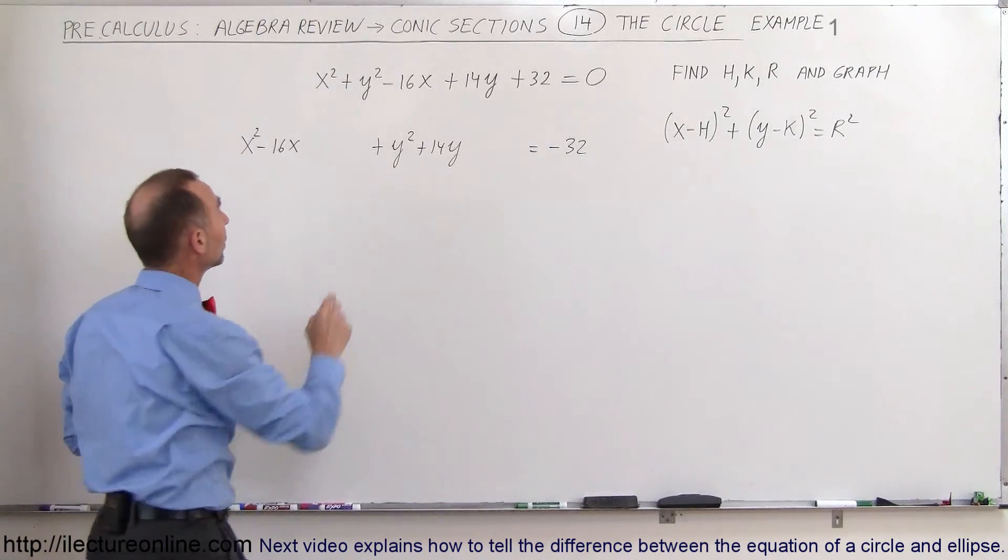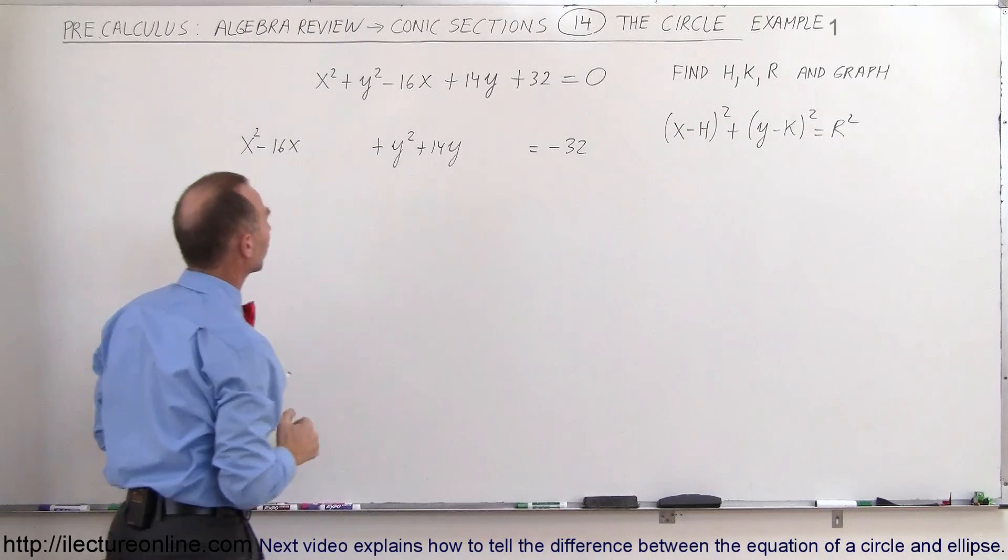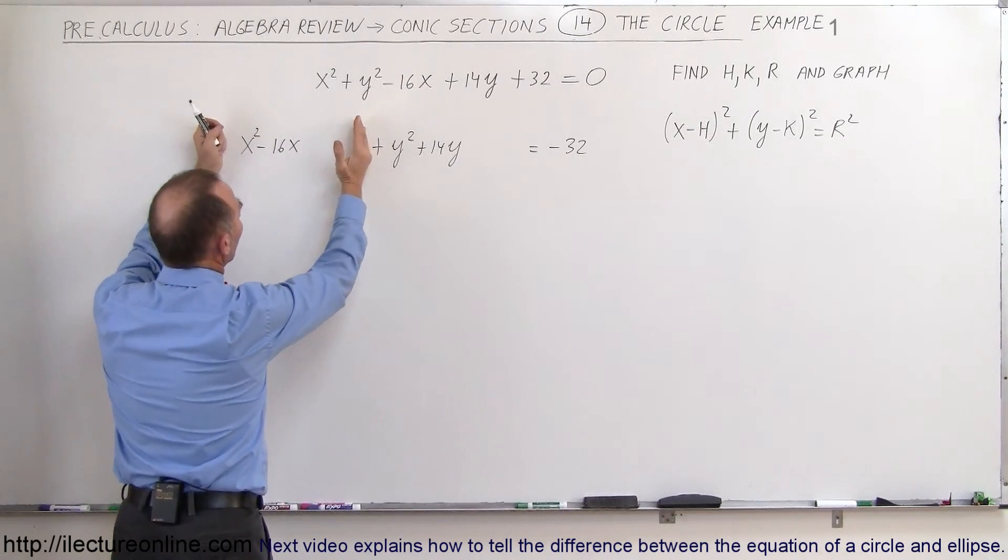How do we know it's a circle? Well, the coefficients from the x squared and y squared are the same, so we know that's going to be a circle. We want this to be a perfect square.